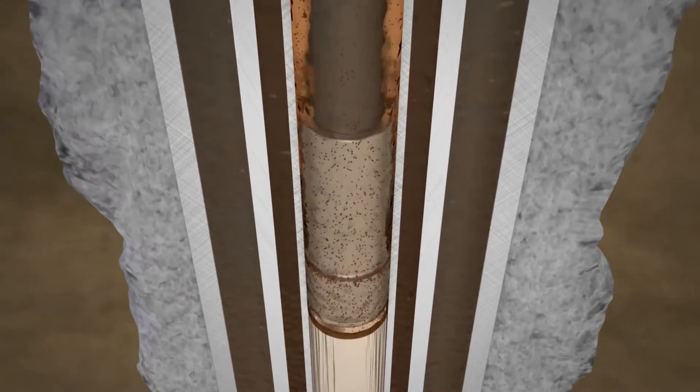On the upstroke, sand becomes wedged between the barrel and plunger, gouging the surfaces and resulting in lost efficiency and shortened pump life.